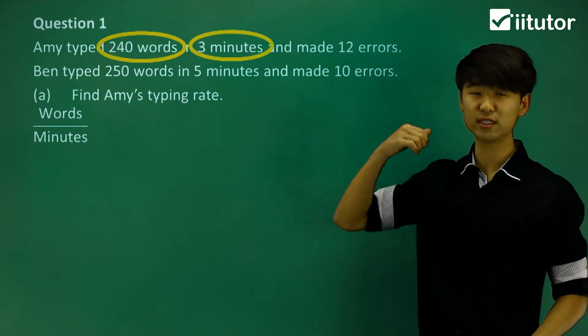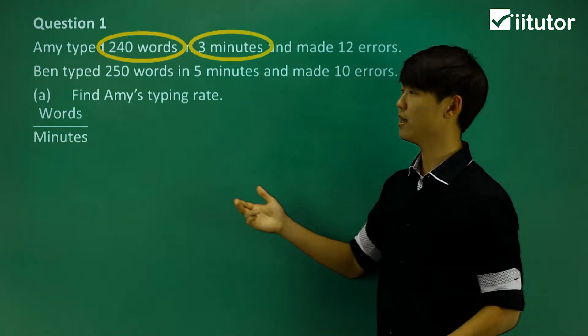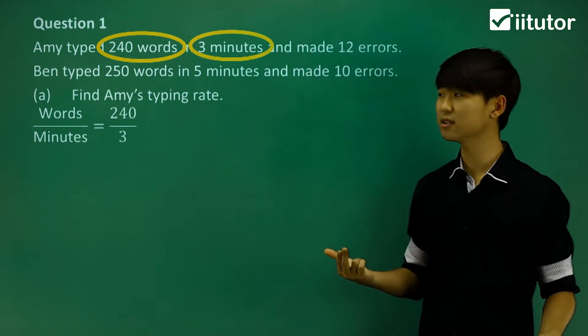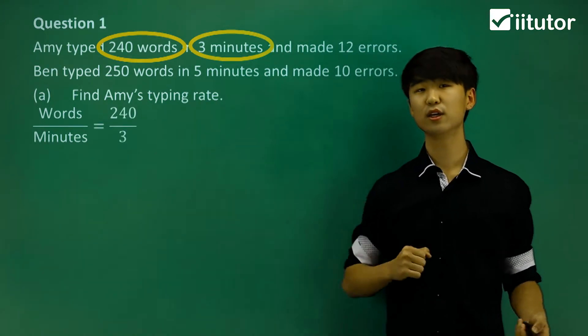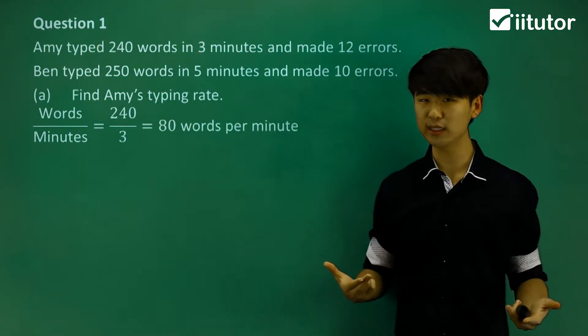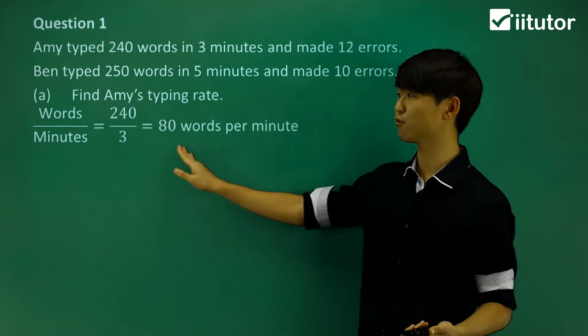There was 240 words in three minutes. Then what we're going to write is 240 over the three minutes. If we calculate this, then we're going to be able to find that her rate is 80 words per minute. This is the rate for the first one.